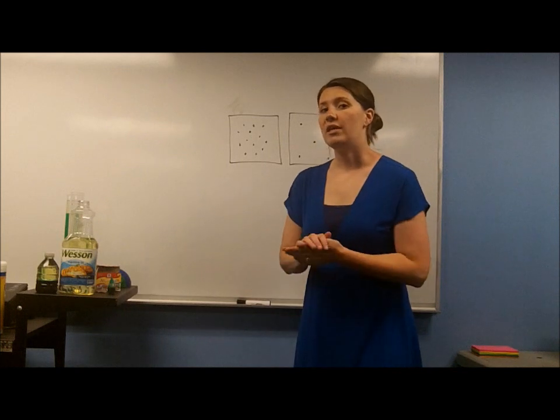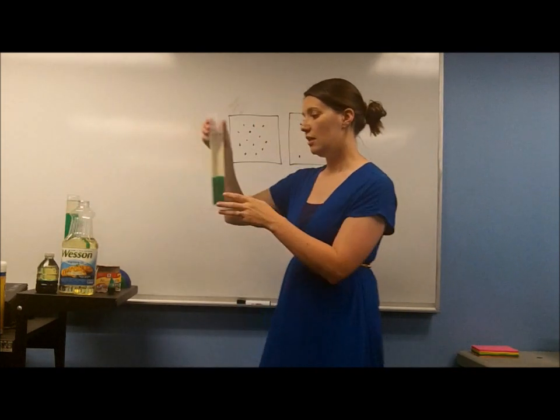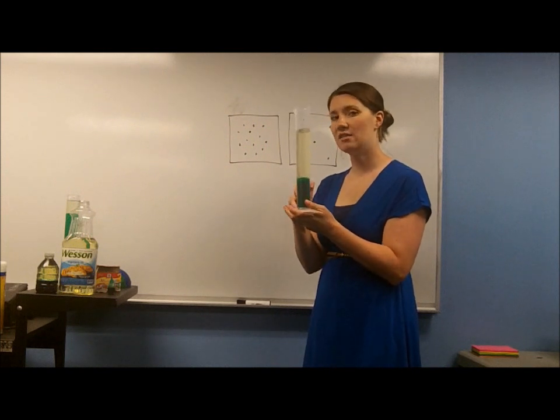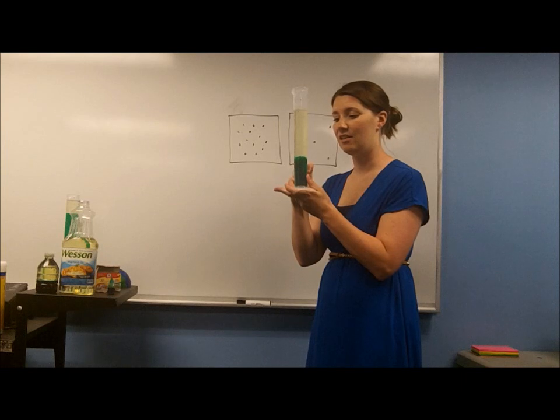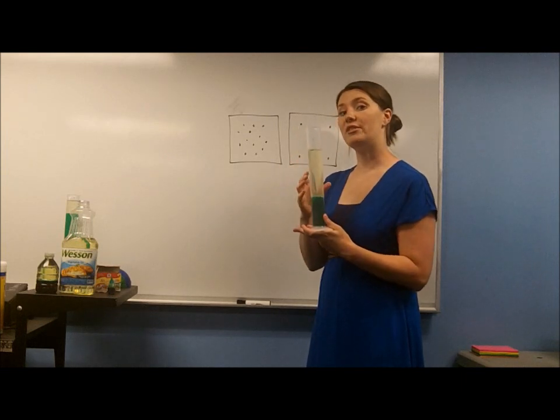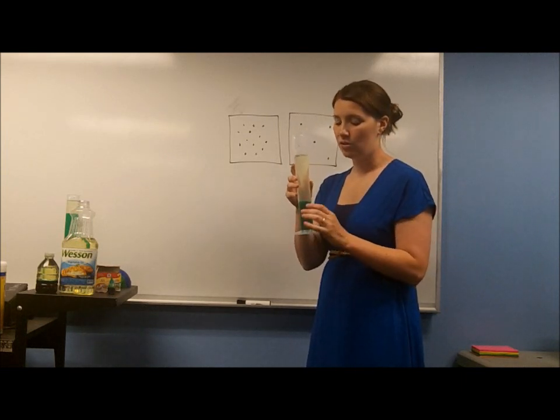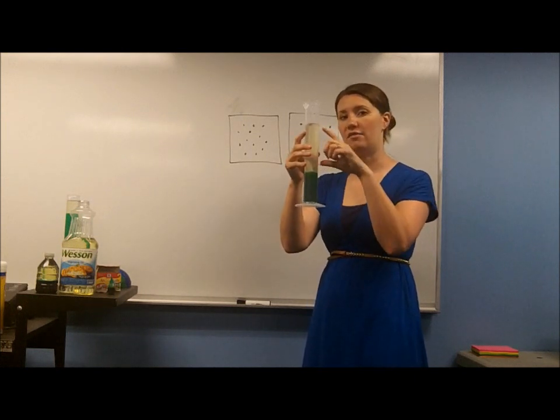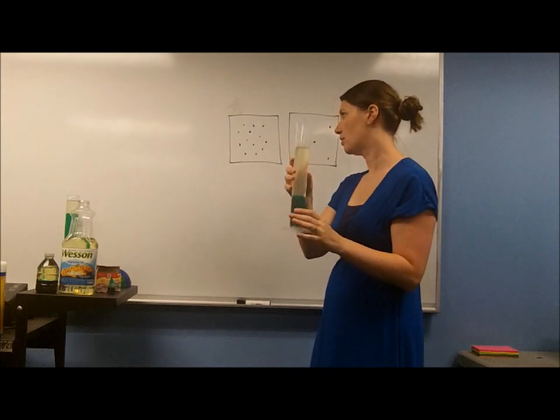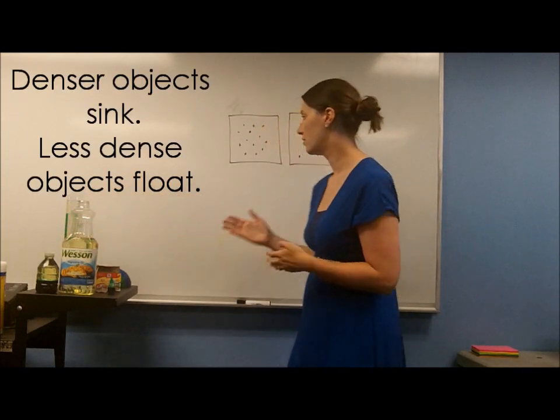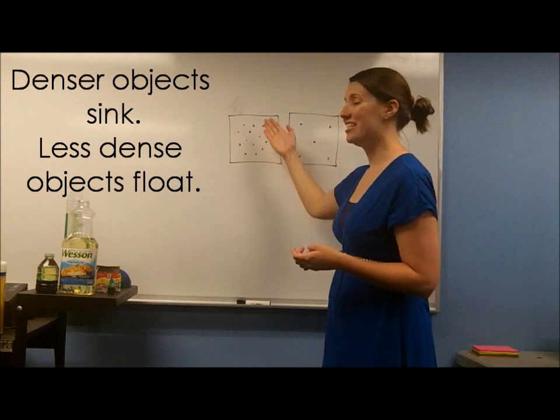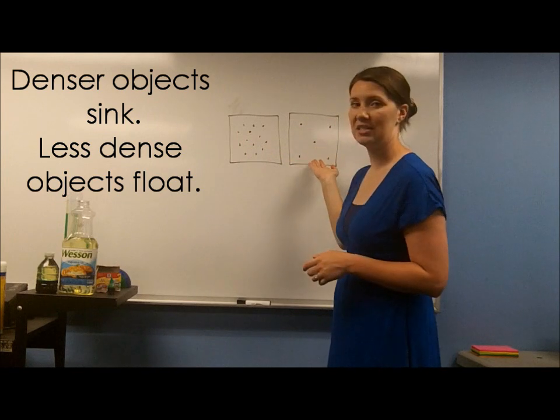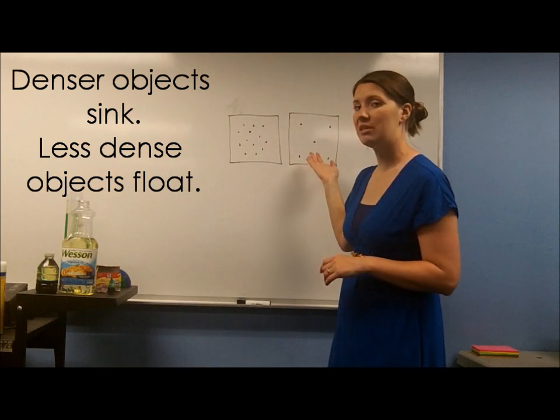So what we can conclude from this demonstration is that because the water sank, it had something to do with the water's density. Things that are more dense or denser will sink. Things that are less dense, no matter how much there is of it, will float. So in our example up here, this object is denser, which means that it could sink. This object is less dense, which means that it could float.